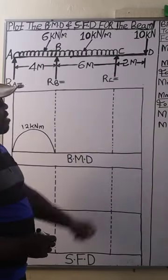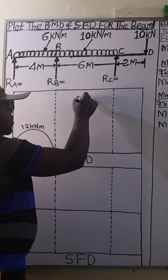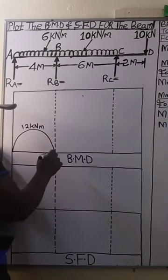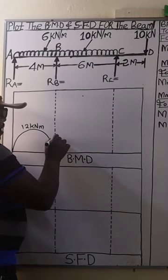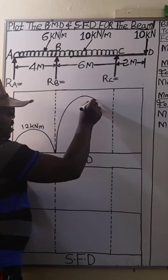Then for the span BC, we have a maximum bending moment of 45. So let's have it at that point. It is also going to be a smooth curve, since the span is loaded with a uniformly distributed load.